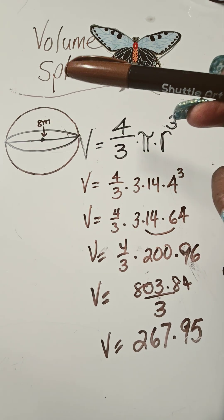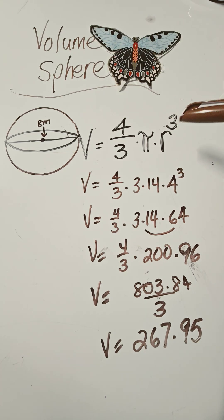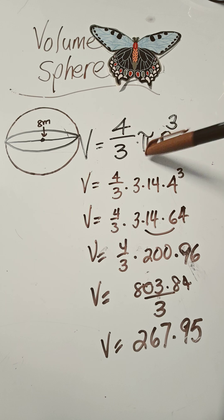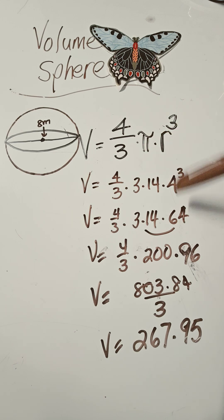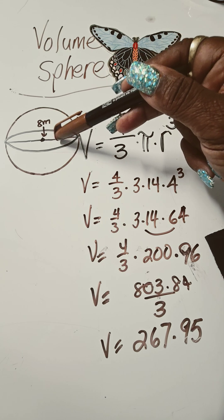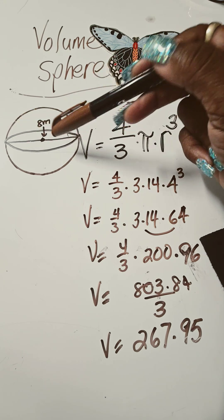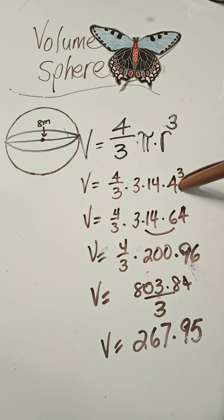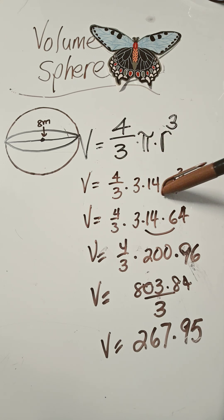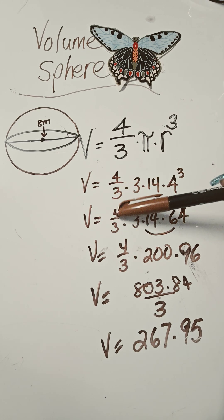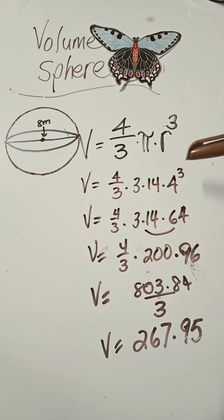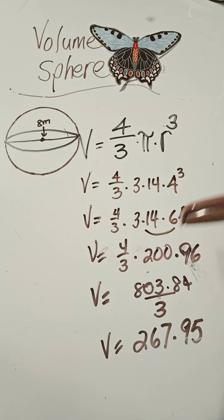I'm being silly, but I'm sure there's a number. So we got the volume equal four thirds times pi times the radius cubed. And since the diameter is eight, the radius is four. Remember, the radius is half the diameter. So I plugged the four in for you. So it's four thirds times 3.14 times four cubed, which gives us four thirds times 3.14 times 64, because four cubed is 64.